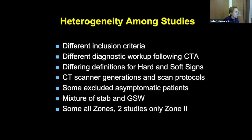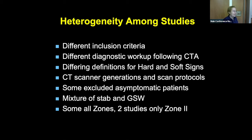Going through the studies in general, the data is very heterogeneous — all different inclusion criteria, different workups, hard and soft signs defined differently, CT scanners of different generations, some included asymptomatic patients, some didn't, and they mixed gunshot wounds and stab wounds, which are very different injuries. Some looked at all zones, some just zone two. So the data is kind of all over the place, making it hard to make definitive statements.